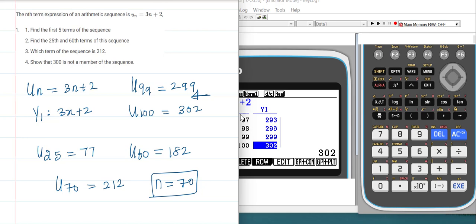If we try to find the n value, it will come as a decimal, 99 point something. Which means if it's not an integer, definitely that's not a member of the sequence. So 99th term is 299 and 100th term is 302. The common difference is 3, so definitely 300 is not a member of this sequence.